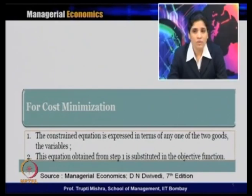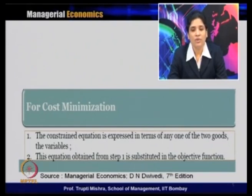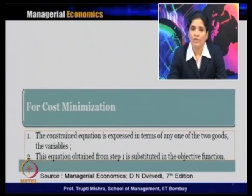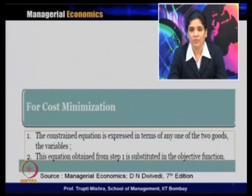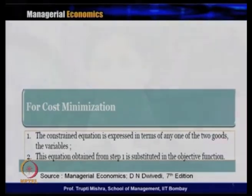We will see how to use this substitution technique for a profit optimization problem and for cost minimization. The method remains the same: the constraint equation is expressed in terms of one of the two variables, and that equation is substituted into the objective function — whether it is a cost function or a profit function. The basic rule is to express one variable in terms of the other, get its value, and substitute back into the objective function.